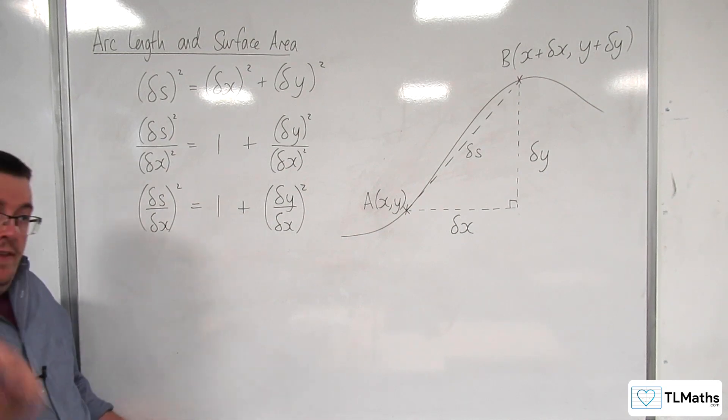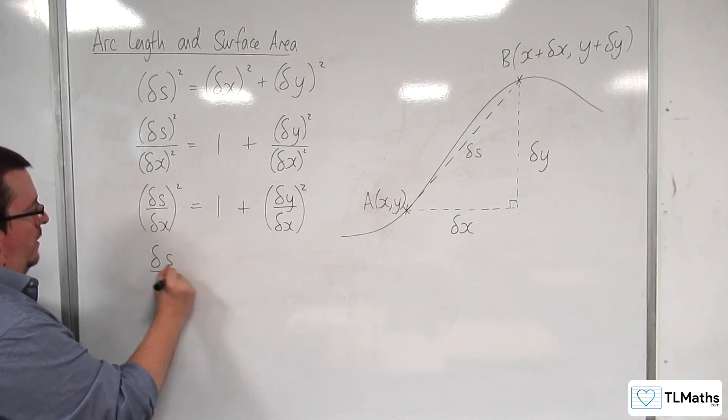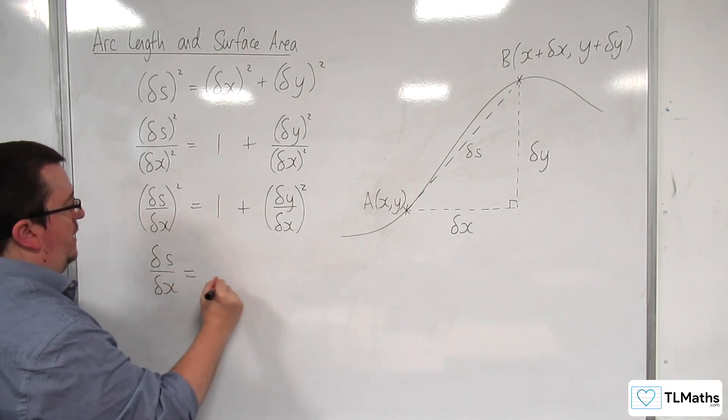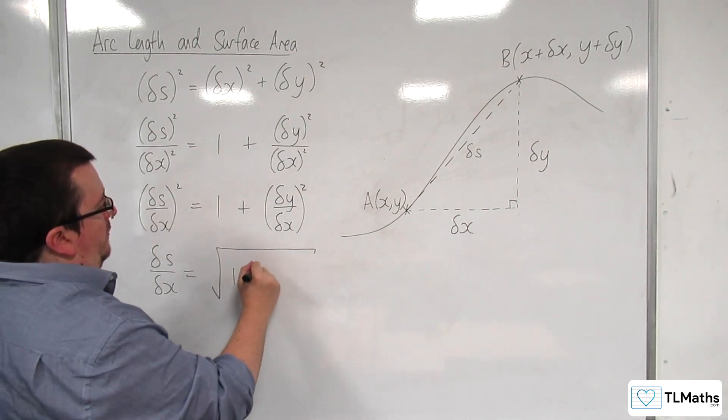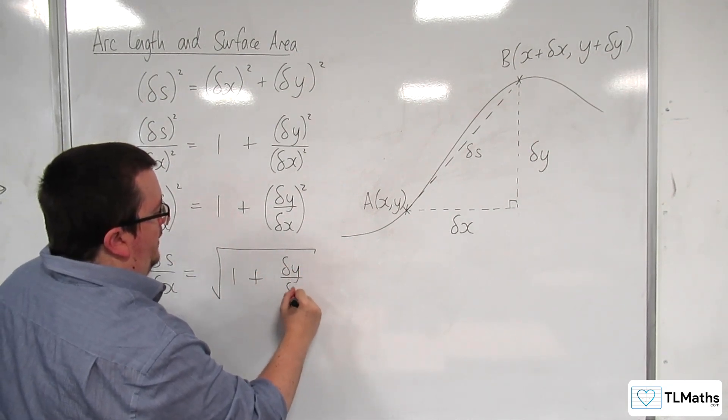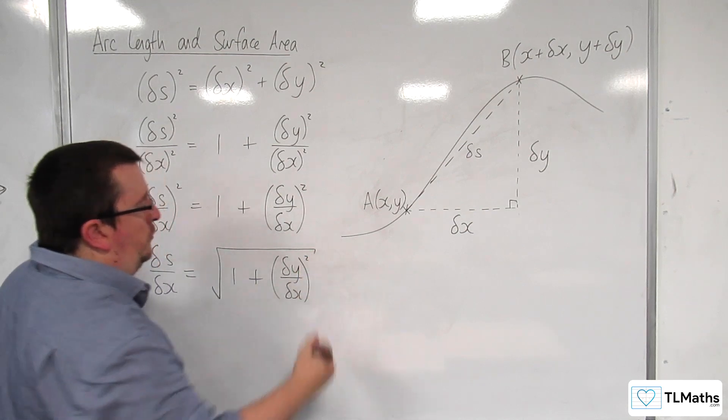Then I can square root both sides and say delta S over delta x will be equal to, and because we're talking about length, the positive square root of 1 plus delta y over delta x all squared.